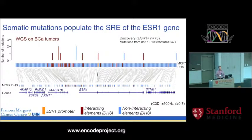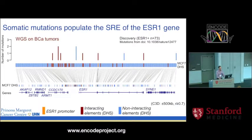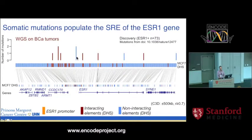We then overlay on top of that information the position of mutations called through whole genome sequencing in primary breast tumors — published data from 73 ER-positive primary tumors. Whenever a mutation maps to a DHS site predicted to be part of the set of regulatory elements for ESR1, we color-code it red; otherwise blue. Just by eye, you can see there are more red mutations over red DHS sites than blue over blue — more mutations mapping to the set of regulatory elements of ESR1 than to DHS sites outside of it. But we need statistics.